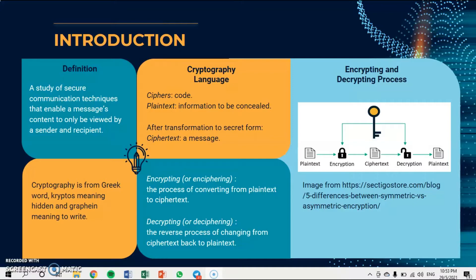In cryptology, you need to know the cryptography language. There are five cryptography terms. First is the cipher, which means a code. And the second is plaintext, which is information to be concealed. And ciphertext is a message after transformation to a secret form. For the fourth is encrypting or enciphering, which is a process of converting from plaintext to the ciphertext. For the fifth is decrypting or deciphering.